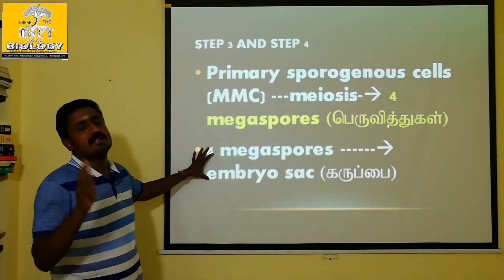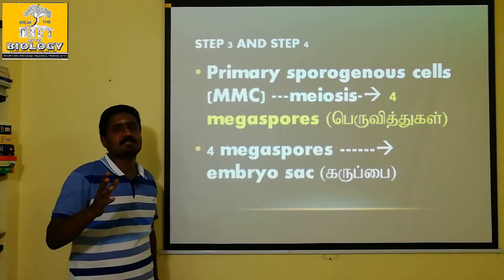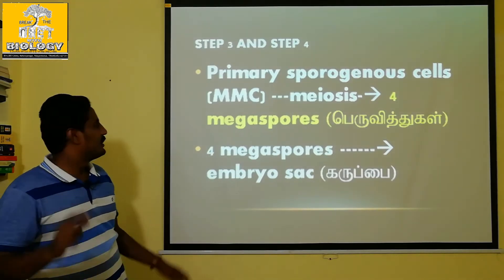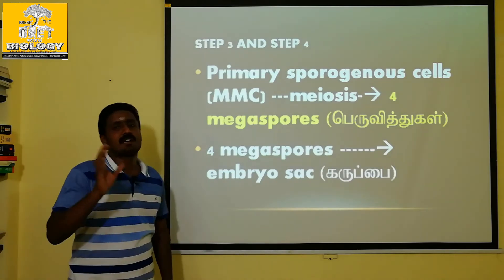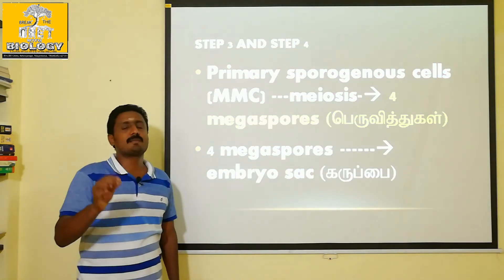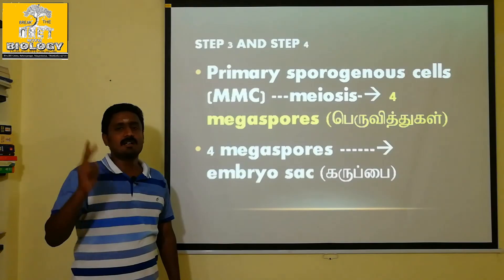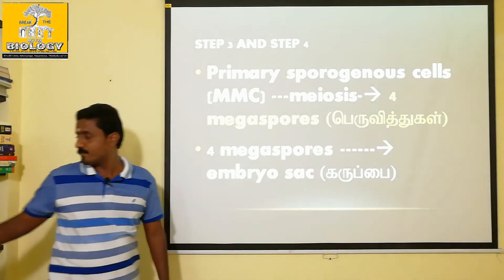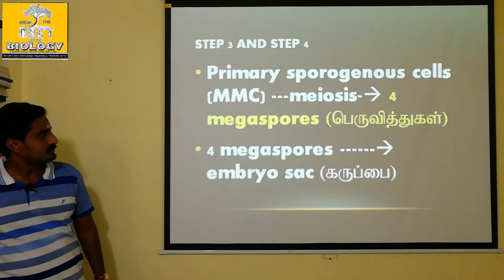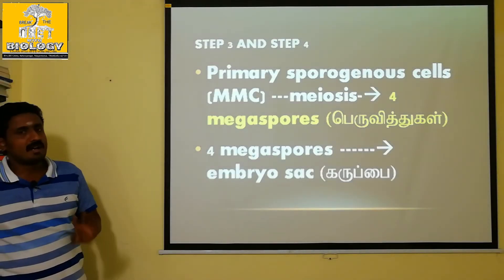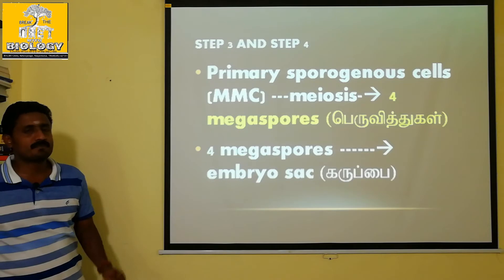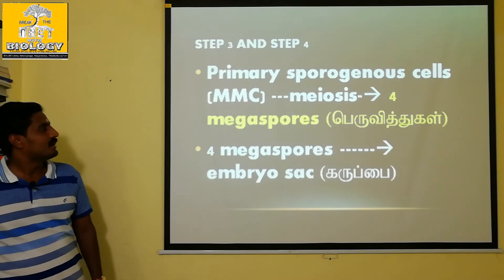In the 4th step, the embryo sac is formed. In some plants, 1 Megaspore develops into the embryo sac; in others, 2 or all 4 Megaspores contribute to embryo sac development.